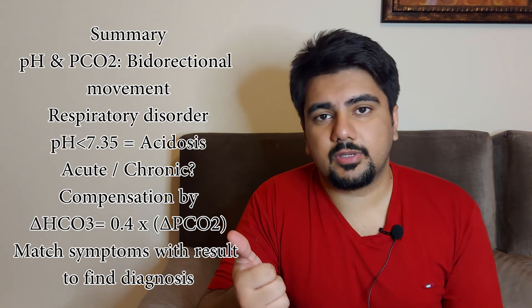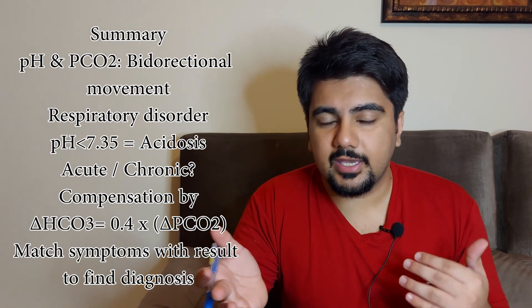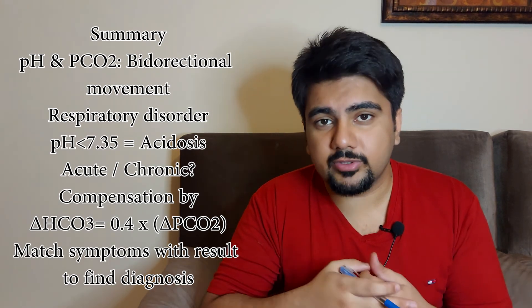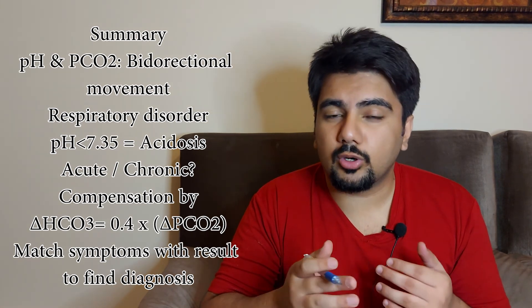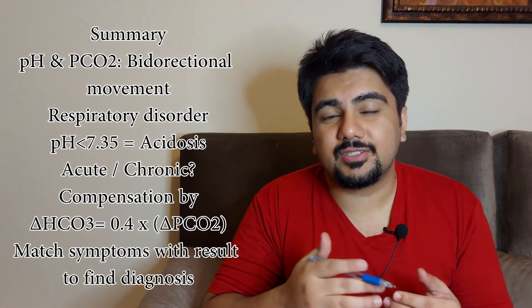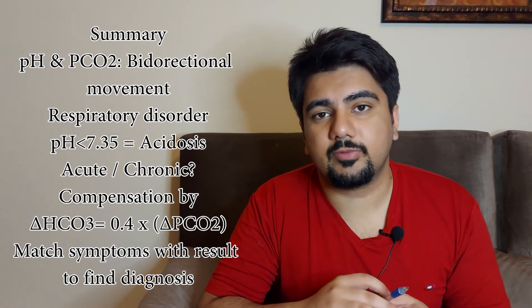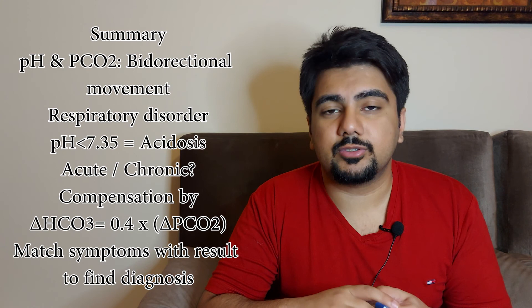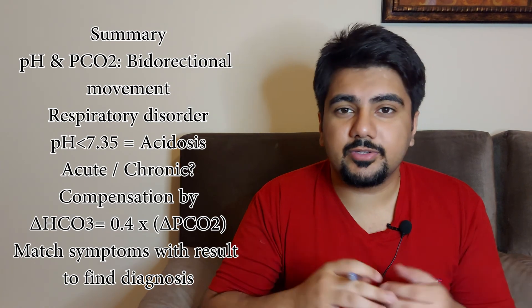Let's summarize this video. First, look at the pH and pCO2 — if it is a bi-directional movement (opposite directions), it is a respiratory disorder. Next, look at the pH: below 7.35 is acidosis, above 7.45 is alkalosis. Then look at the bicarb: normal or near normal means acute respiratory acidosis; deranged means chronic respiratory acidosis. For compensation, the calculation is: delta bicarb = 0.4 × delta pCO2.